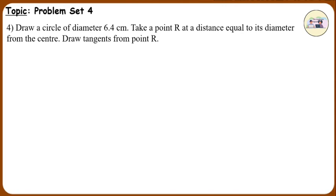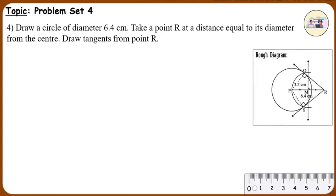Problem set 4, question number 4: Draw a circle of diameter 6.4 cm. Take a point R at a distance equal to its diameter from the center. Draw tangents from point R. Analysis: Diameter is equal to 6.4 cm, therefore radius is equal to 6.4 divided by 2, which is equal to 3.2 cm. Let the center be P; therefore distance PR is equal to the diameter, which is equal to 6.4 cm.